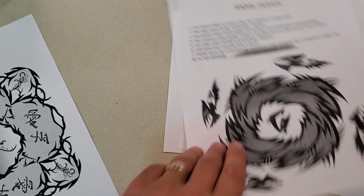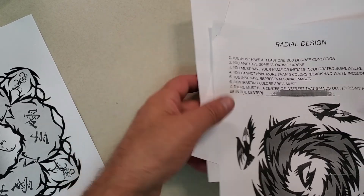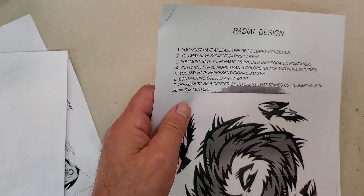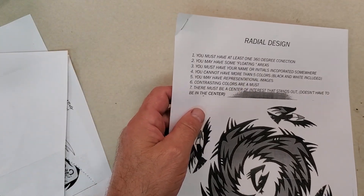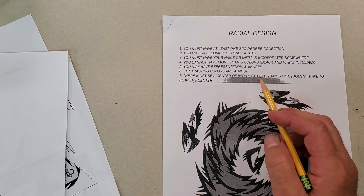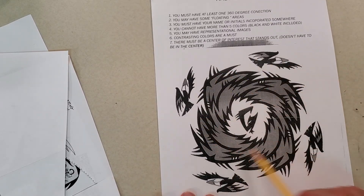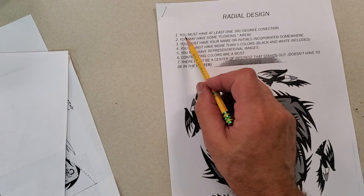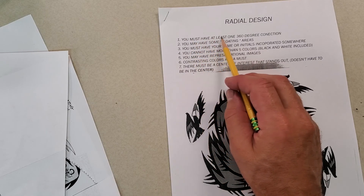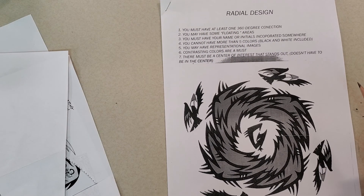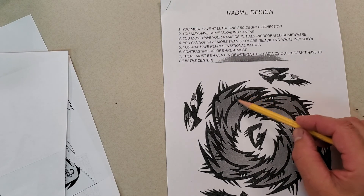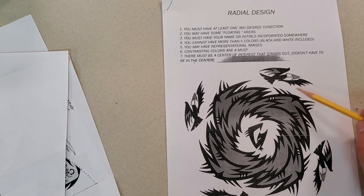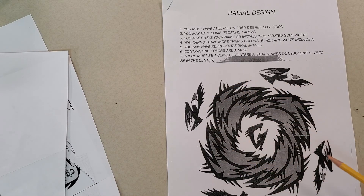We're going to get started on radial designs. I handed a sheet out to you and I just want to go over these — if you take a look at that sheet and kind of read through them with me. First of all, when you're coming up with your design, we've got some guidelines for you. First, you must have at least one 360-degree connection. In other words, you have to have something that connects 360 degrees. You can't just have a bunch of floating objects.